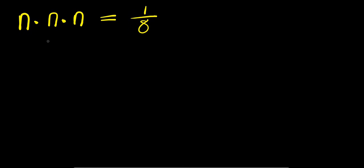Hello. How to solve this problem: we have n times n times n equals 1 over 8, solving for all values of n that satisfy this equation. So n times n is n squared, times n — this is n cubed — equals 1 over 8.